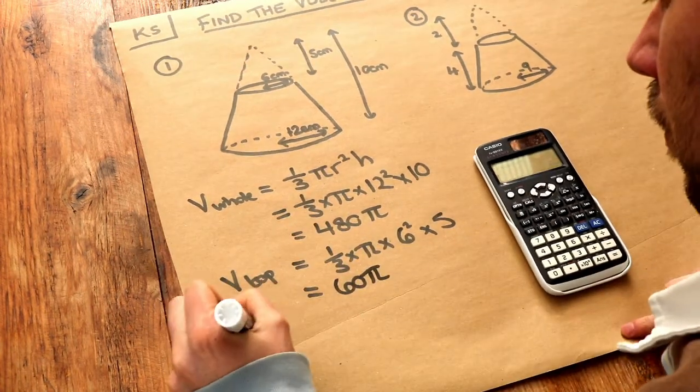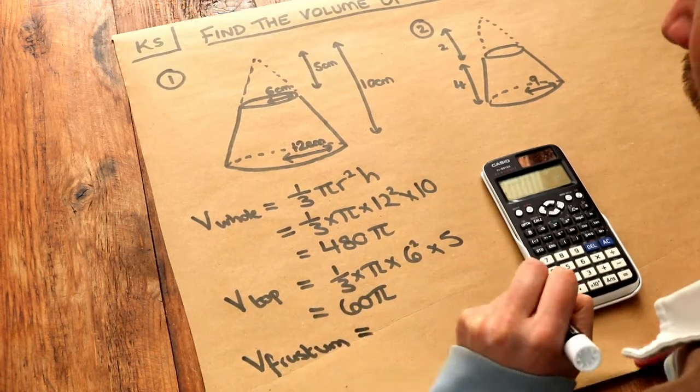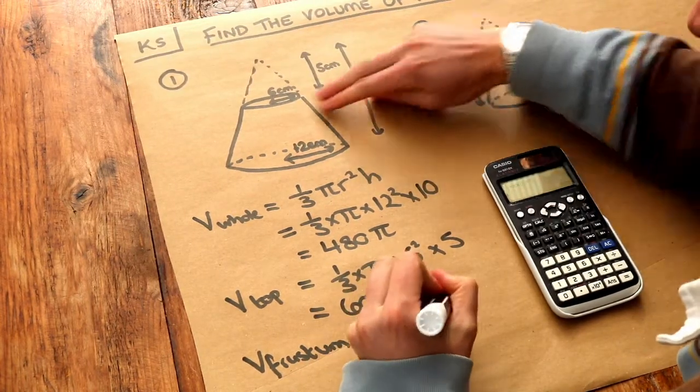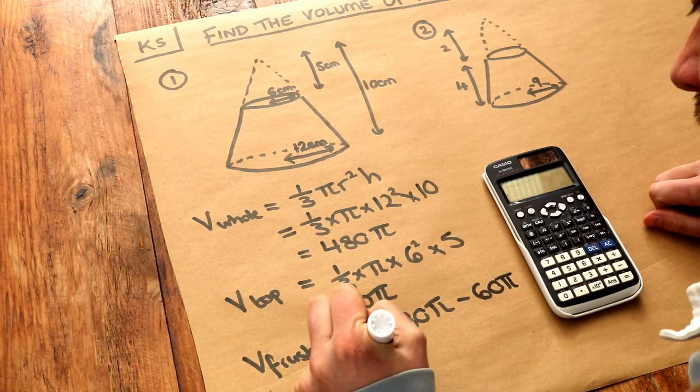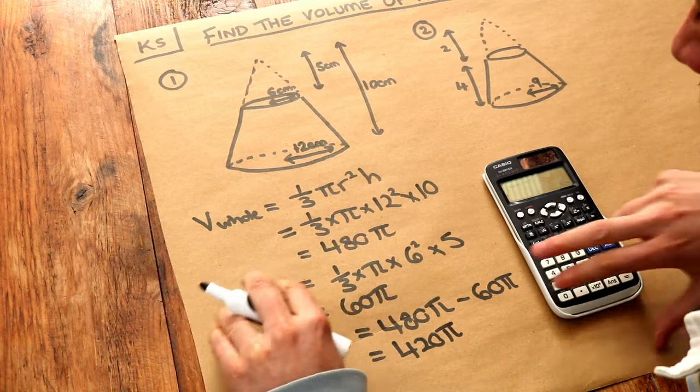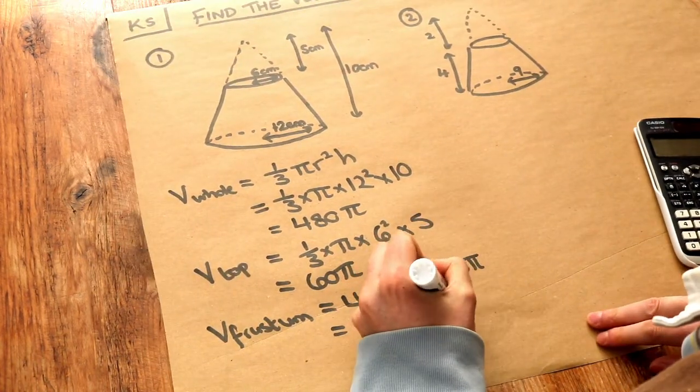So therefore the volume of the frustum of the cone is just a difference between the two. We start with the big cone, 480 pi, and we subtract the cone at the top. And that's going to leave 420 pi. And you could give that as a decimal if you want. And we do need to give the unit for this, so it's centimeters cubed.